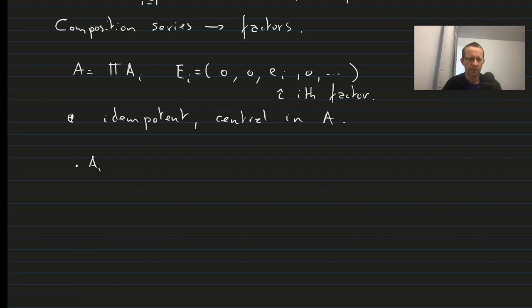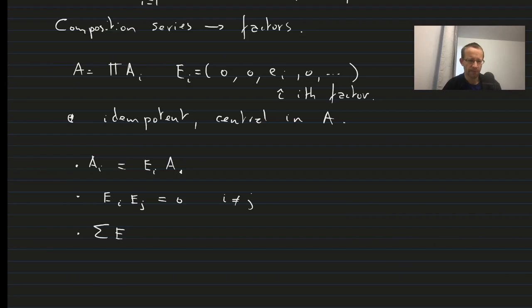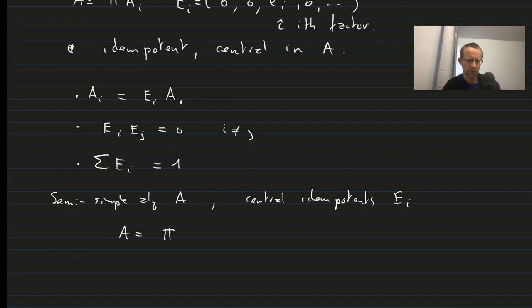Moreover, we have that each AI can be written as EI times A, that these central idempotents satisfy EI·EJ is equal to zero for I different from J, and moreover we have a decomposition of unity. So we can characterize the semi-simple algebra A as having a decomposition in terms of central idempotents EI such that basically A is the product of EI·A.